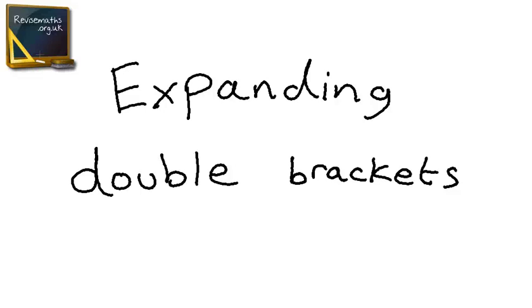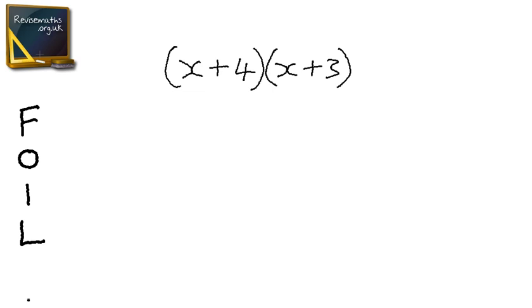How to expand double brackets. Expanding double brackets is sometimes called multiplying out, and that's because we're going to multiply the first bracket, x plus 4, by the second bracket, x plus 3.